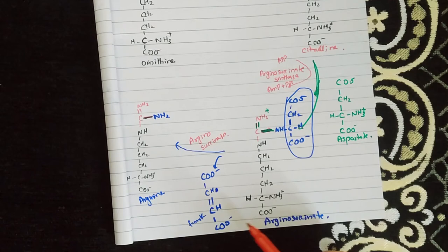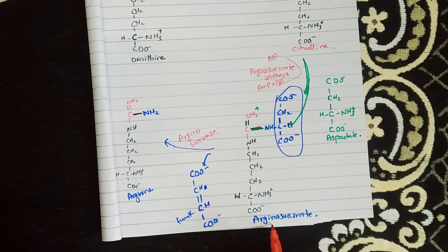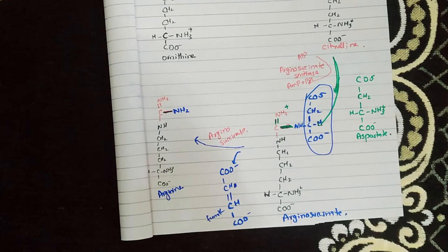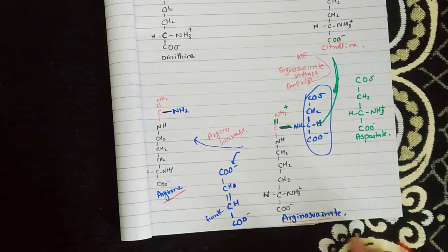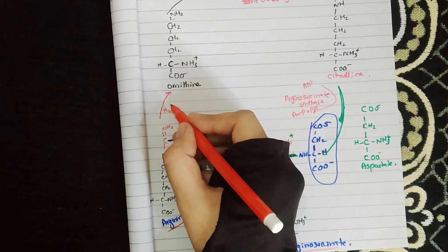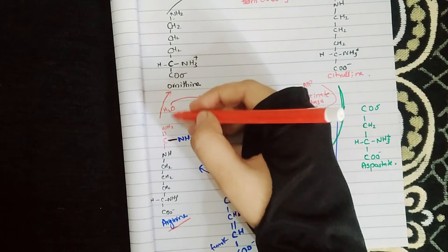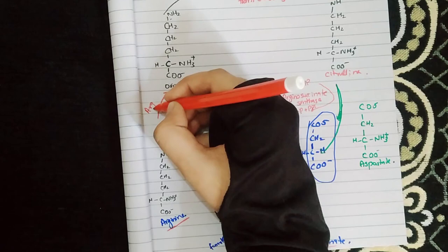The steps so far: Step 1 was synthesis of Carbamoyl Phosphate, Step 2 was formation of citrulline, Step 3 was synthesis of Argininosuccinate, Step 4 was cleavage of Argininosuccinate to Arginine. The last step is the formation of Urea. A water molecule is removed from Arginine, producing urea (CO-NH2) and ornithine. The enzyme used is Arginase, which breaks Arginine, and the ornithine is reused in the cycle.